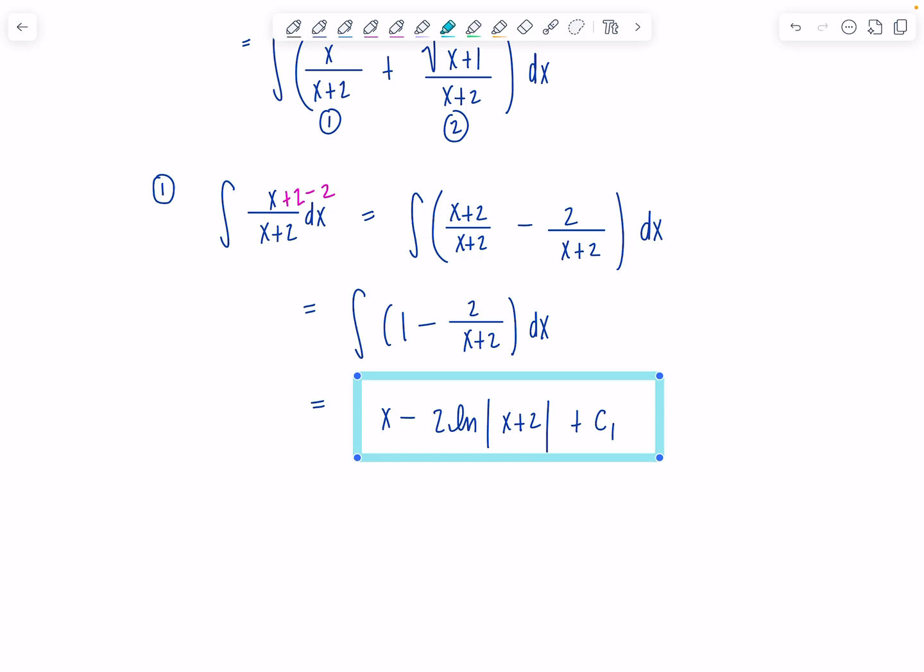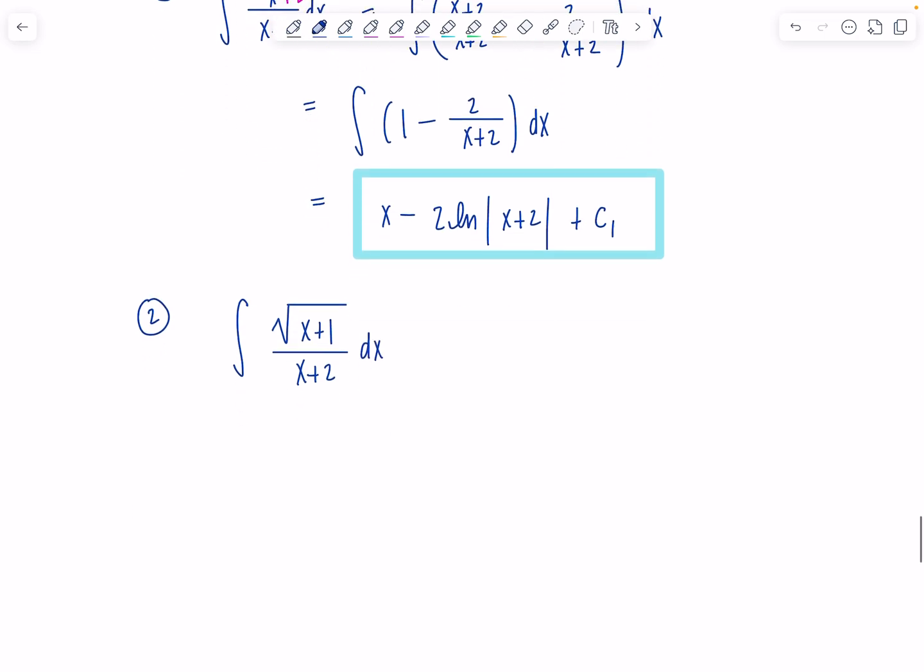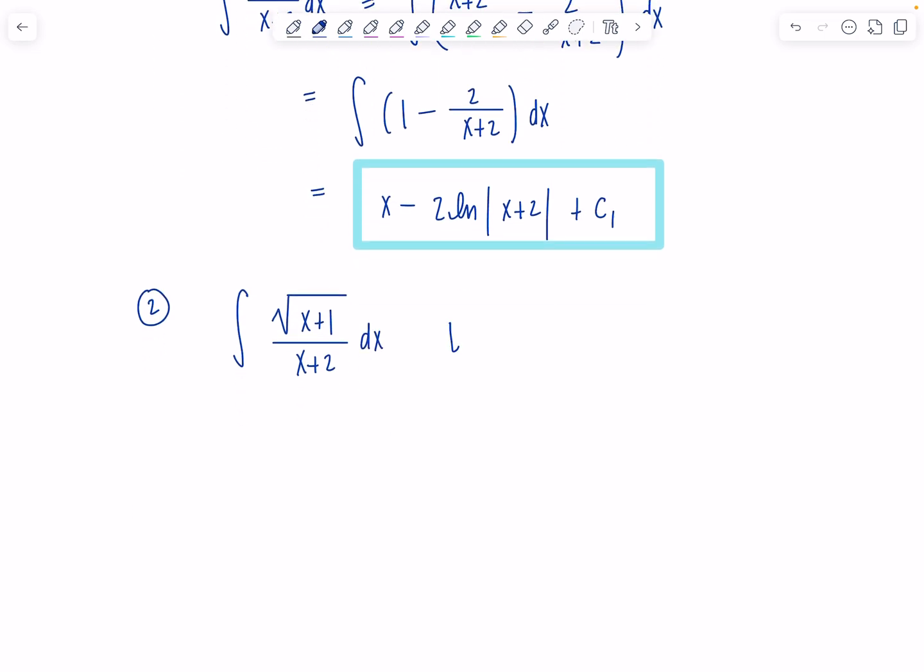Okay, now for this second one, we're going to use the rationalizing substitution that I showed you guys in a previous video. So we have square root x plus 1 over x plus 2 dx. I'm going to go ahead, you could let u, but I was feeling like let's let it be t today, you know. t be the square root of x plus 1. Before you differentiate both sides square it, it will make life so much easier. So t squared is x plus 1. Then 2t dt is dx.